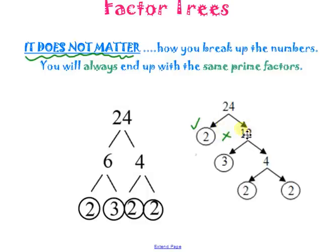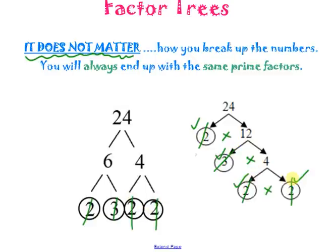But then you have 12 — break that up. 3 times 4 is 12; 3 is prime but 4 is not, so break that up into 2 times 2. So you end up with a 2, a 2, a 3, a 2, and a 2 — the same exact prime factors no matter how you broke up your tree.